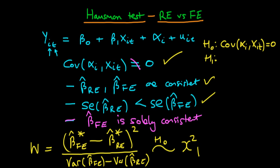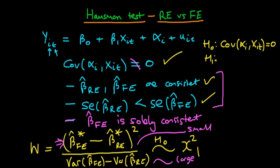The intuition behind this test statistic is as follows. If the null hypothesis is true, then both random effects and fixed effects are consistent, meaning the difference between the two estimates — which is essentially the numerator — should be very small. Additionally, if the null is true, the variance of fixed effects is greater than the variance of random effects, so the denominator is relatively large. This means the value of W will be quite small.